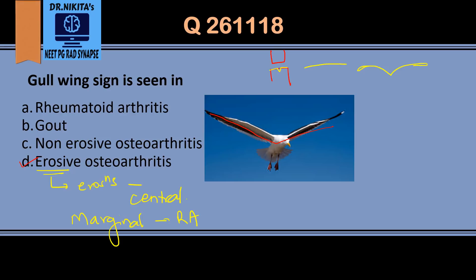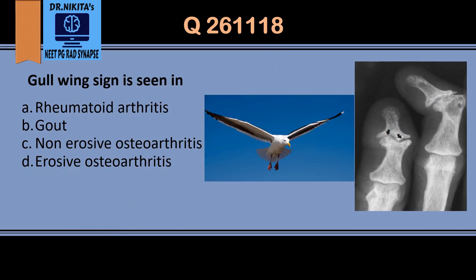In addition to the central depression, there is marginal or peripheral proliferation, which together gives the seagull or gull wing appearance — like the bird shape we used to draw as children. On the radiograph, you can see the central erosion along with peripheral or marginal osteophytes and bone proliferation creating this seagull appearance.